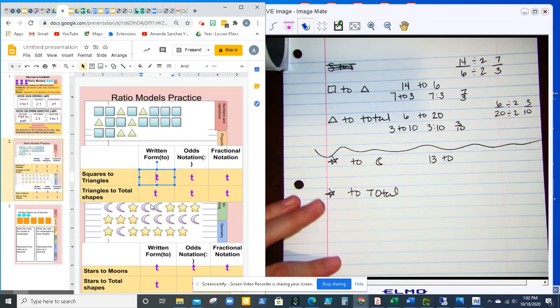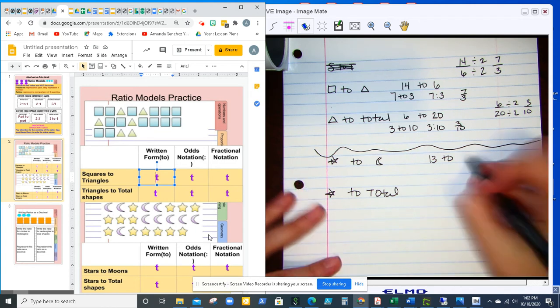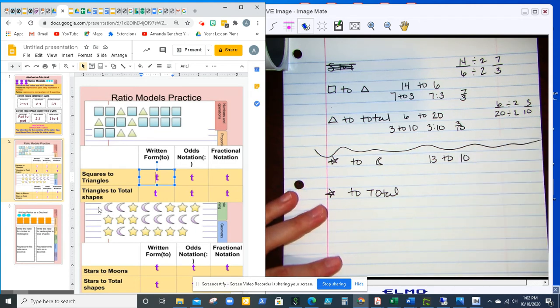And how many moons? Counting by twos, 2, 4, 6, 8, 10. I think that I'm counting right, I'm going to double check though. 2, 4, 6, 8, 10 moons. And recounting the stars, that's 13. Yeah.